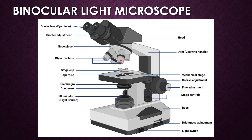The objective lens is directly present above the stage and is available in various magnifications like 10x, 40x, and 100x. When using the 100x objective, you must use immersion oil. Immersion oil is used to improve the resolution of a light microscope at high power — it has the same refractive index as glass, and when placed between the high-power objective and the glass slide, more light from the specimen enters the objective lens instead of being refracted away, resulting in a sharper, clearer image.